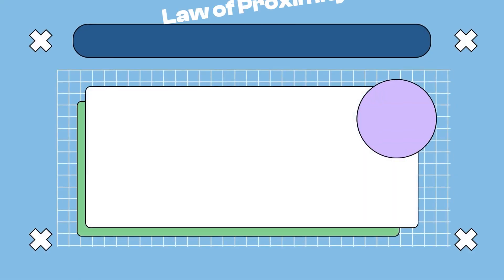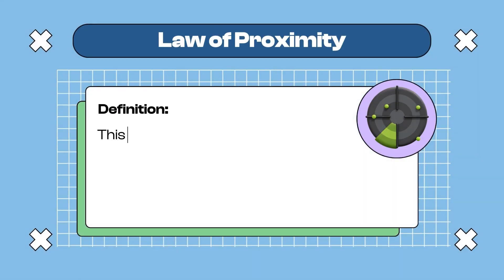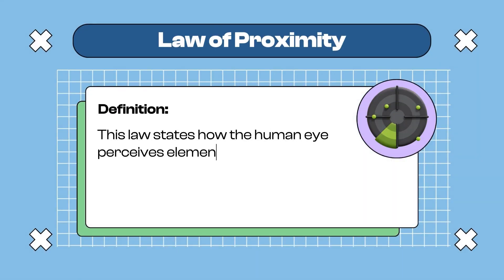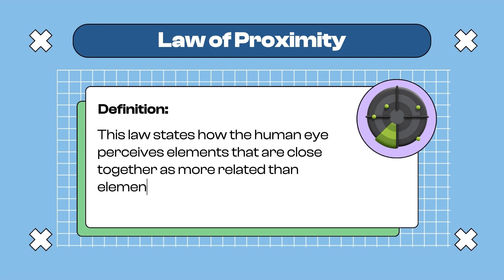Law 1: The Law of Proximity. This law describes how the human eye perceives elements that are close together as more related than elements that are further apart. Here is a group of elements — there is no space between the two groups of elements.